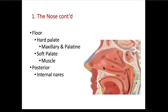The floor of the nasal cavity is actually the hard and the soft palate. The hard palate consists of the palatine processes of the maxillary bones — you can see the suture right there — and posteriorly, the palatine bones, which are paired. The soft palate consists of muscle covered by mucosa. The structure at the posterior end is the uvula, and we'll talk about that later.